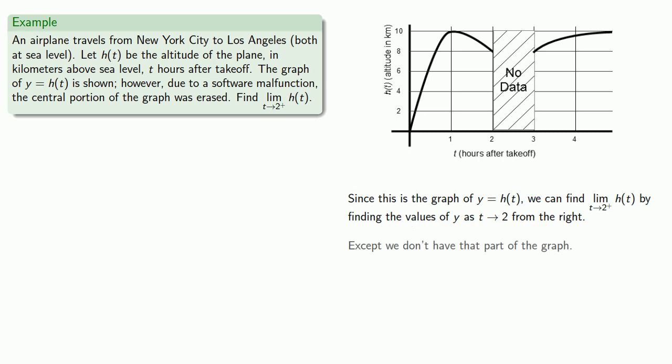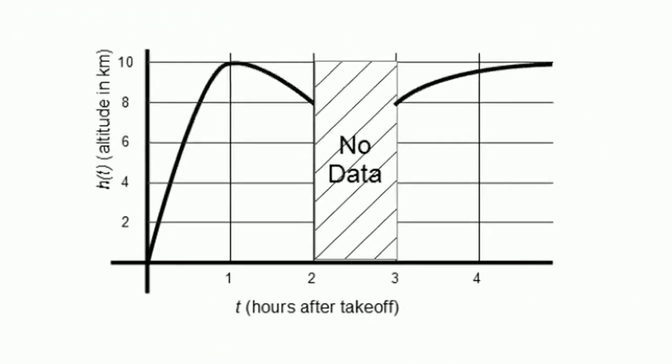Except we don't have that part of the graph. So what can we do? Well, one thing we might do to proceed, let's start with something that we do know. We can approach T equals 2 from the left.